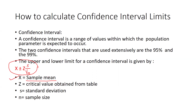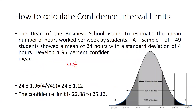Here x stands for the sample mean — the mean of the sample collected from the population. Z is the critical value obtained from the z-table, which is already provided. S stands for standard deviation and n stands for sample size.